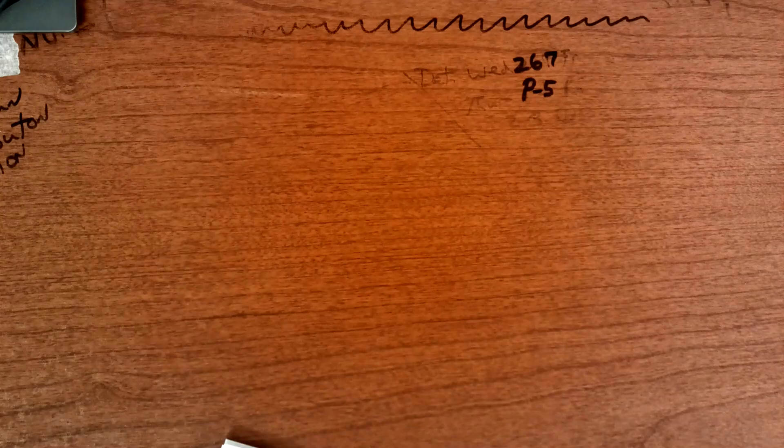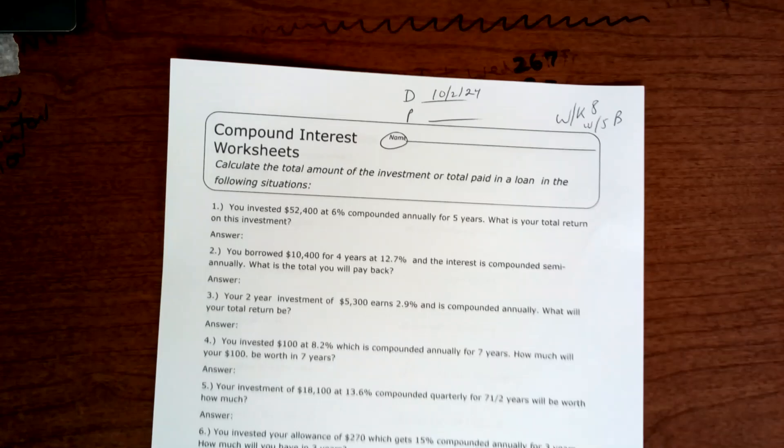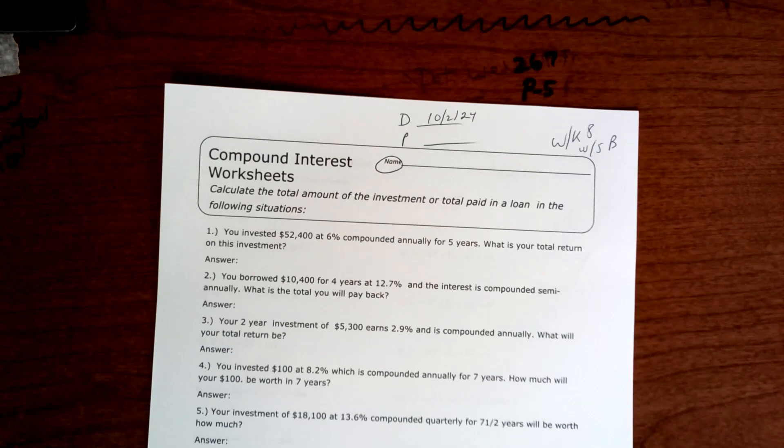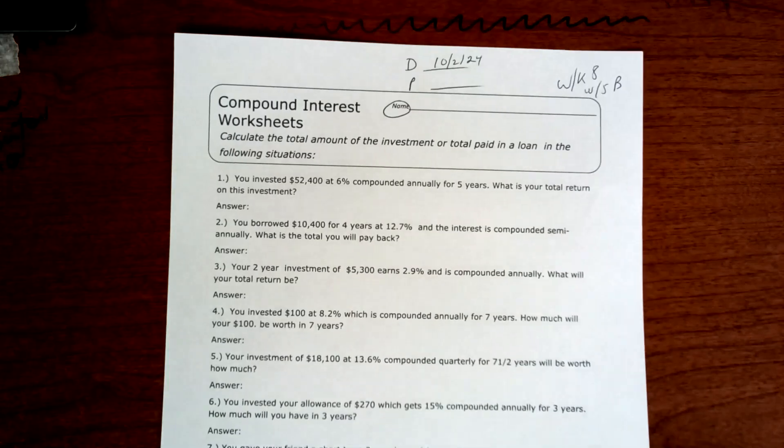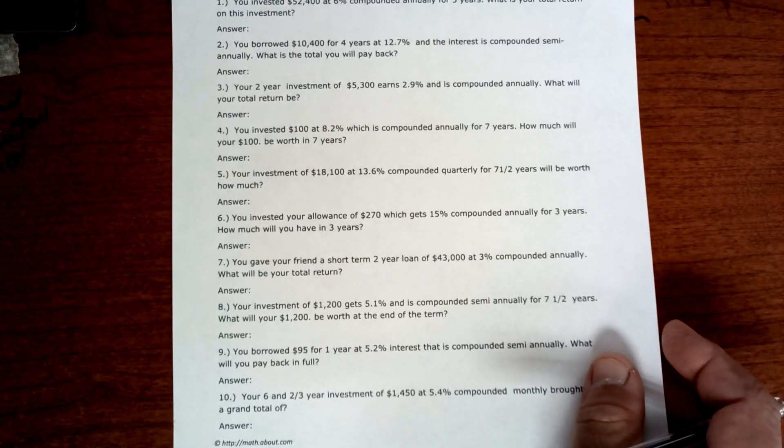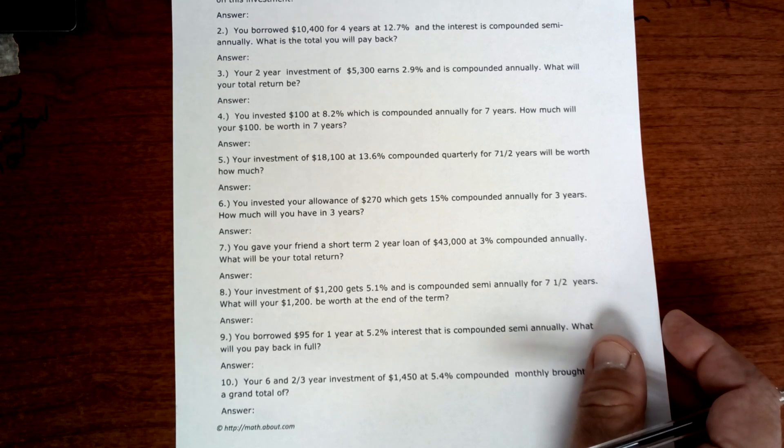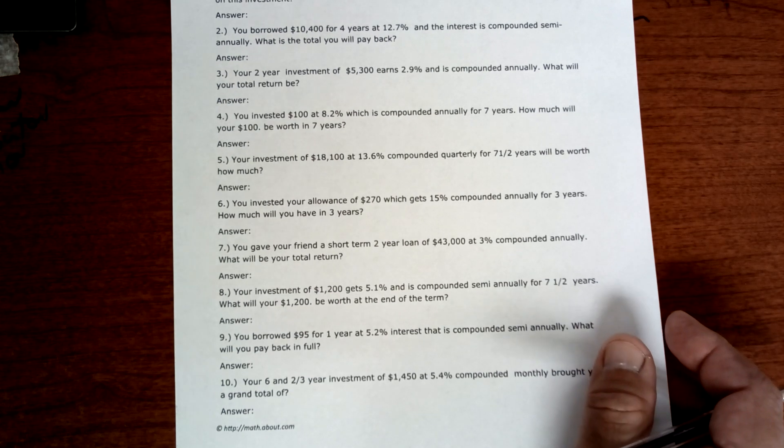And you do that four times because it's quarterly. Any questions on how to do compound interest? Okay, today you have a worksheet right here. And if you get stuck, I want you to ask. So I want name, date, and period. Now if you finish it, I expect you to go back to the book and work the problems in that section.